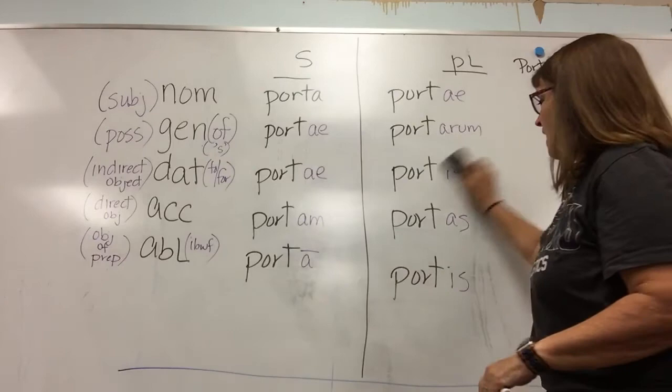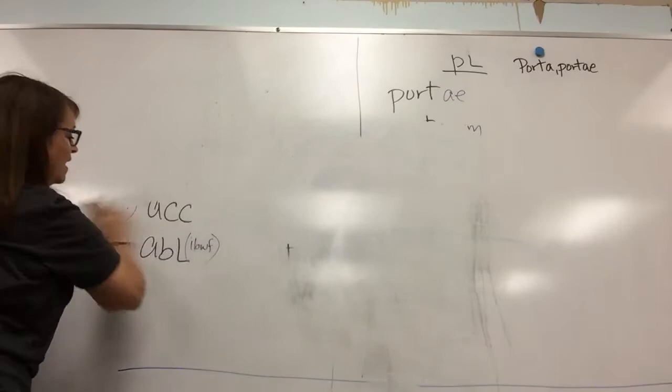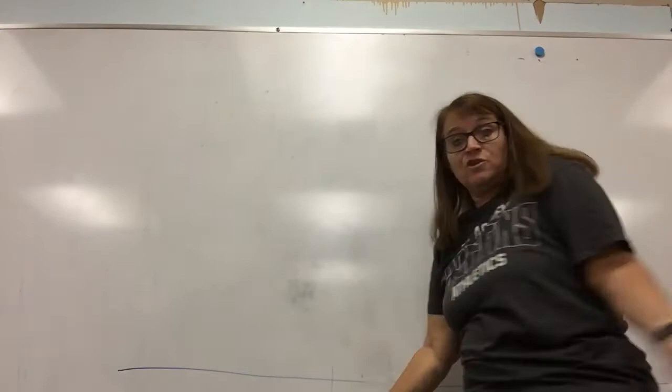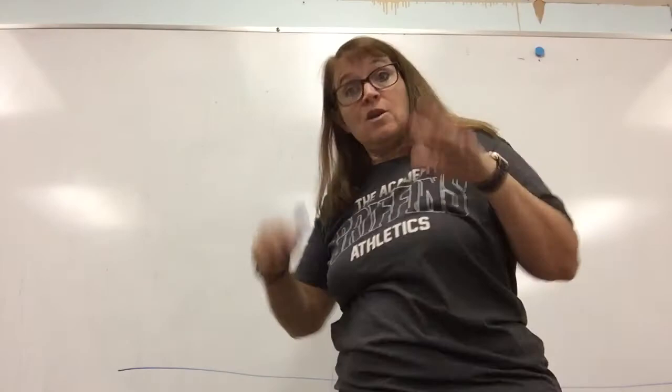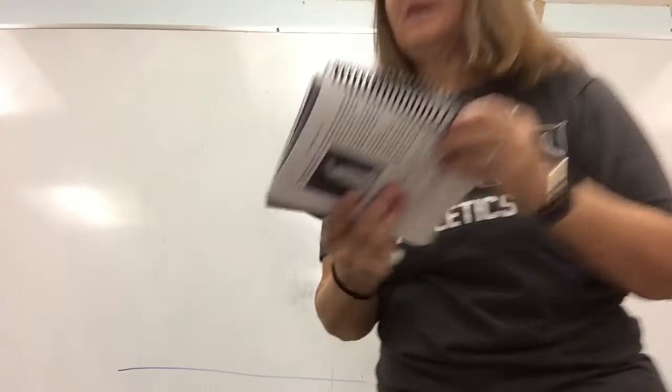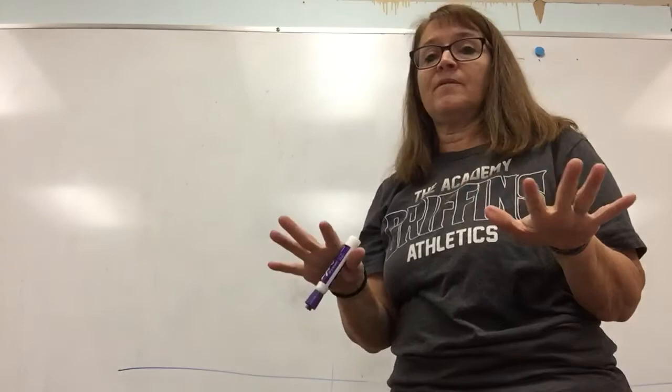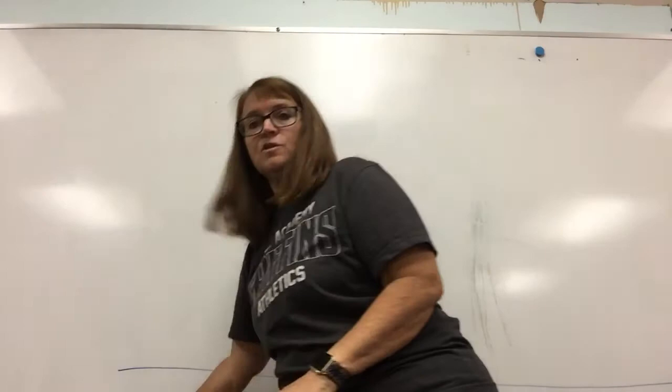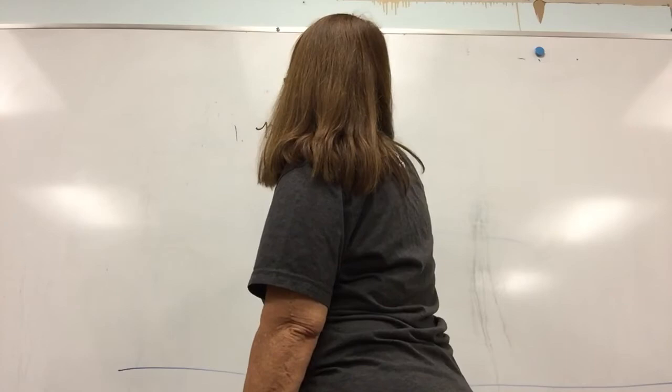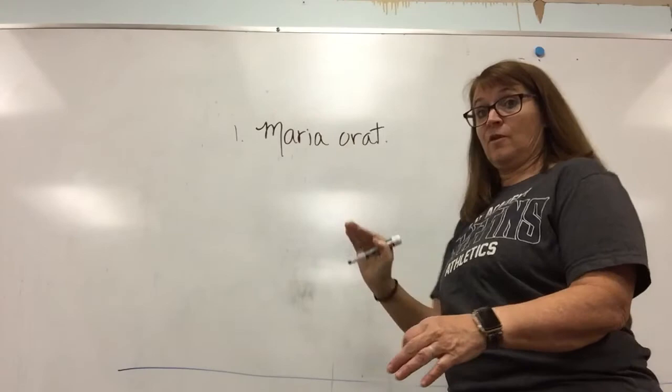Okay, so that's kind of just a review of the case system. Now I want to go over exercise five a little bit to make sure that you understood what you were doing with it. That's when we are already starting to translate. So I'm going to turn to my books — I would ask that whatever we're doing you would be in your purple book and your grammar book in the same places. Turn to page 11 in your purple book and page five in your grammar book. Let's look at just a couple of these. Let's look at number one. I'm going to get my black pen because I know it shows up better. Okay: Maria orat.